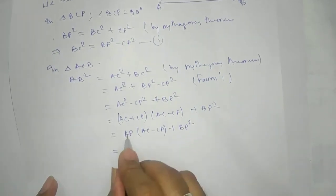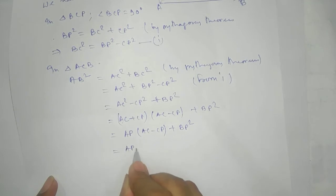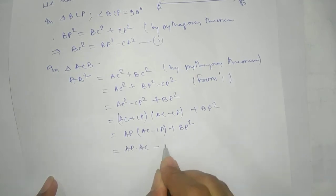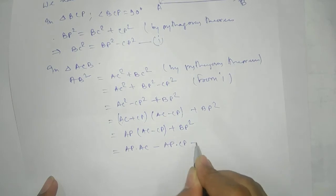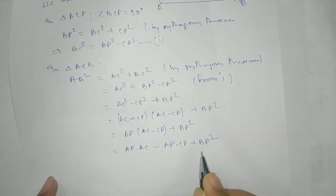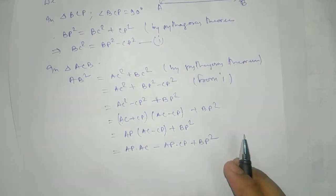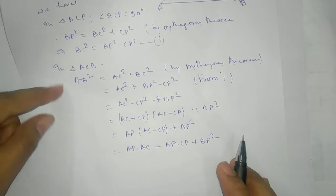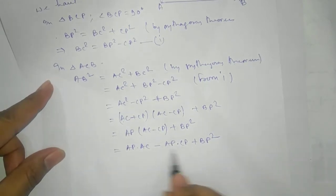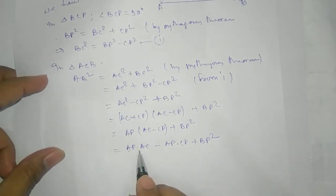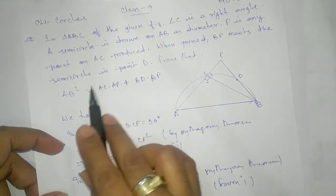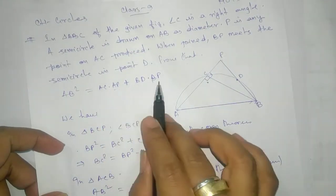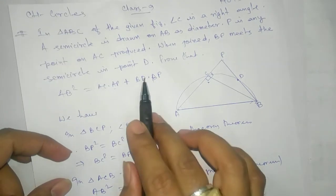So AB² = AP·(AC − CP) + BP². Expanding this gives AB² = AP·AC − AP·CP + BP². We have already obtained the term AC·AP, which is part of our target, so now we need to handle the remaining terms.